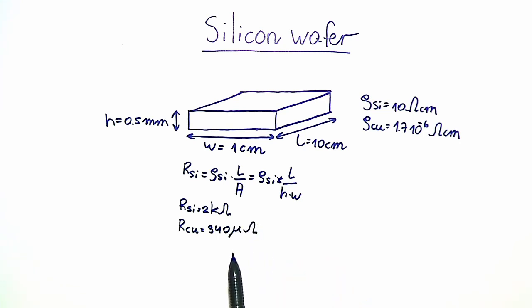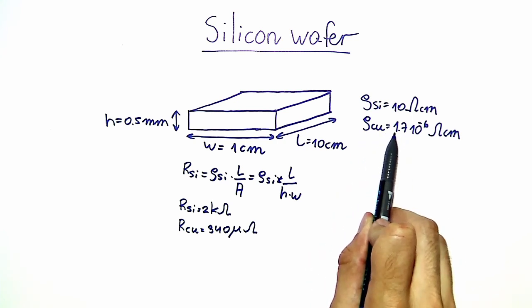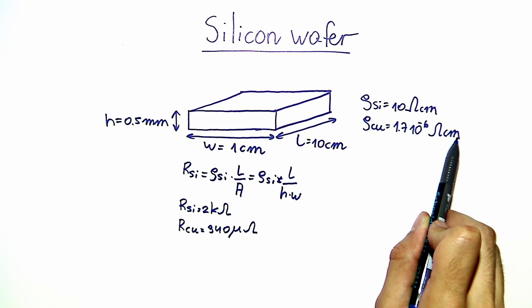This number is many orders of magnitude smaller than the resistance of the silicon bar. This is because copper has a resistivity which is only 1.7 times 10 to the minus 6 ohm centimeters. This is because copper is a metal, not a semiconductor, and conducts very well.